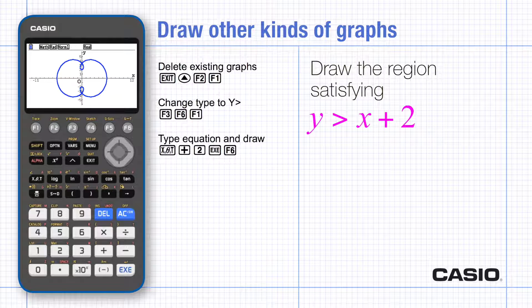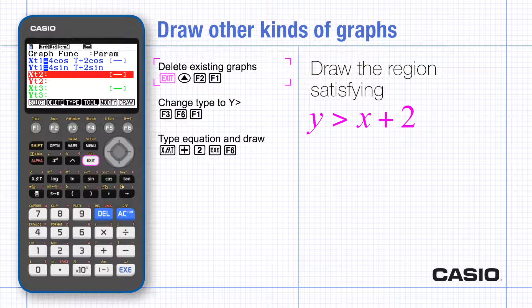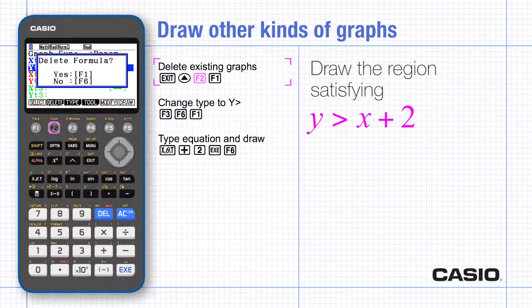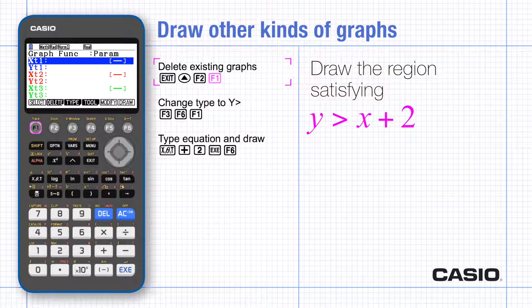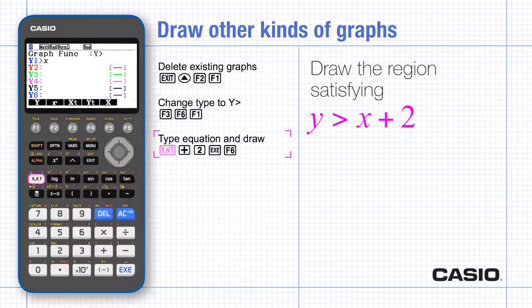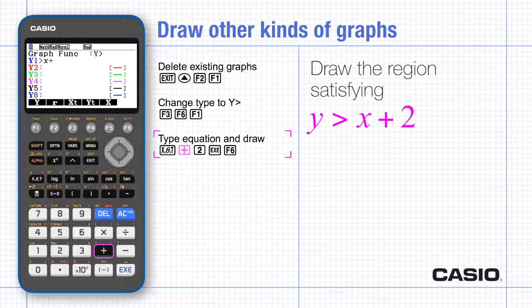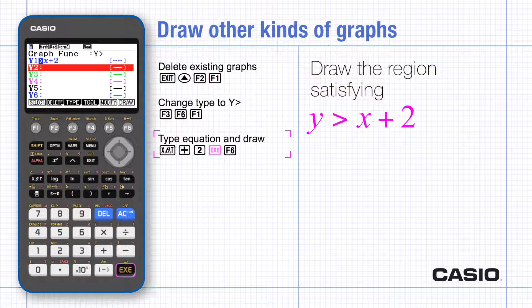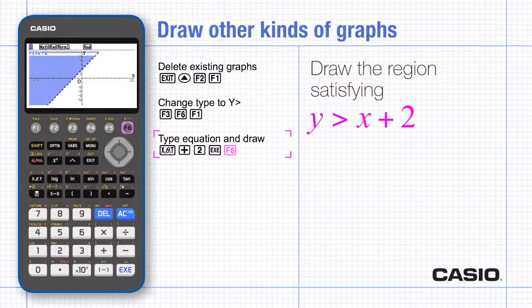Exit the graph and then delete the parametric equations. You'll need to use F1 to confirm that you actually do want to delete them. Then choose type and use the arrow to go to the second set of options and choose the y is greater than option. Use the x theta t key to enter the new inequality and draw.